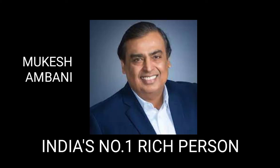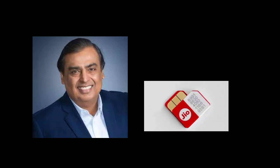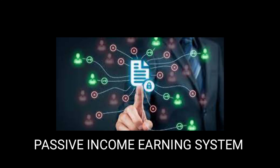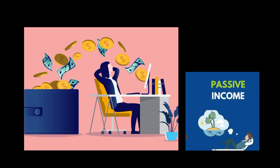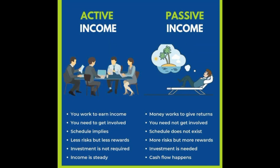Friends, we are talking about the number one rich person in India — the owner of a real estate company. Friends, the owner of the real estate company may have a small initial income, but they have a system that creates money — a passive income. Friends, we have to learn how to generate income. We have two types of income.